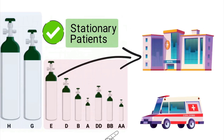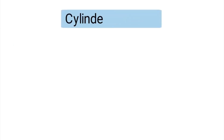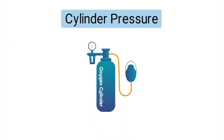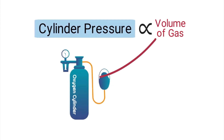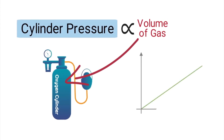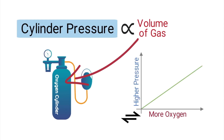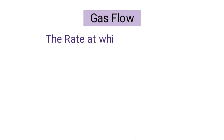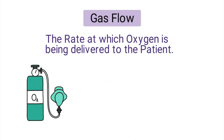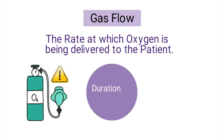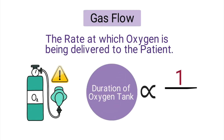The pressure of an oxygen tank is directly proportional to the volume of gas inside the tank. Therefore, the higher the pressure, the more oxygen there is inside the tank, and vice versa. The gas flow refers to the rate at which oxygen is being delivered to the patient. The higher the gas flow, the faster the tank will run out of oxygen. The duration of an oxygen tank is inversely proportional to the gas flow.